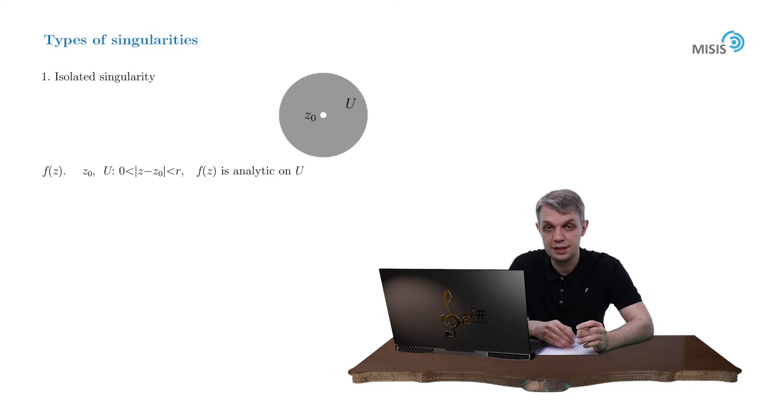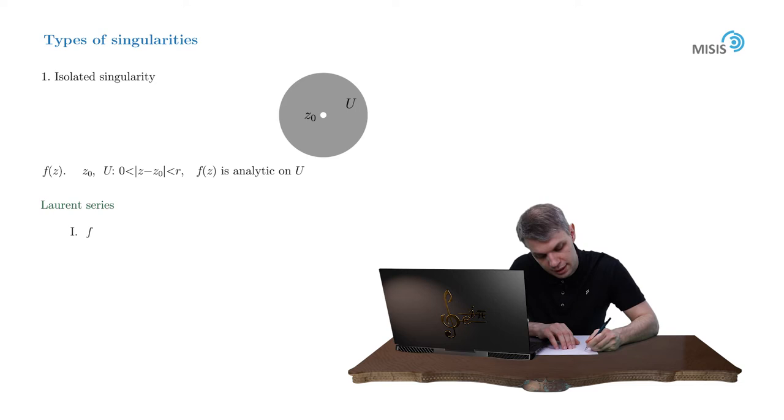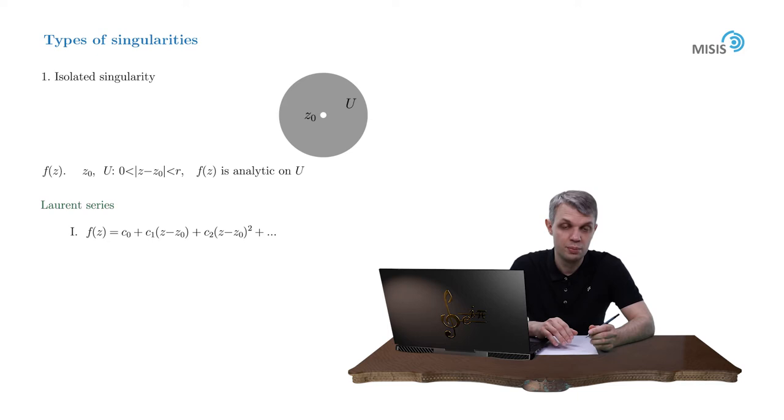It turns out that all isolated singularities can be classified according to the appearance of the Laurent series in the corresponding punctured disk. Three possibilities exist, corresponding to three distinct types. Type 1, by far the easiest, is when the Laurent series doesn't have negative powers at all, written as f(z) = c0 + c1(z - z0) and so on. Clearly, point z = z0 is actually a point of analyticity. That is why this point is called a removable singularity.